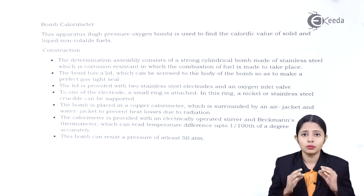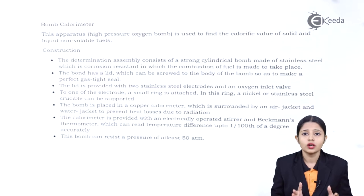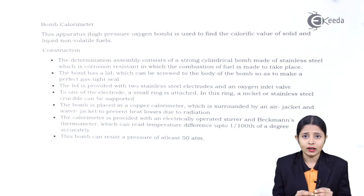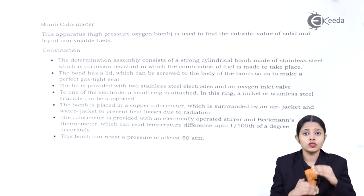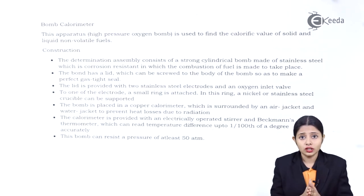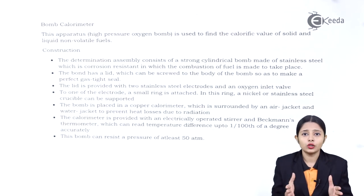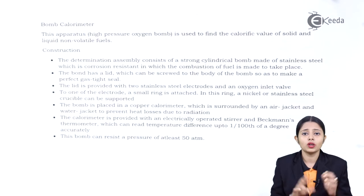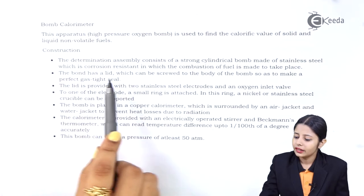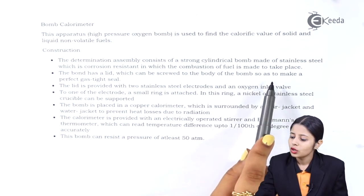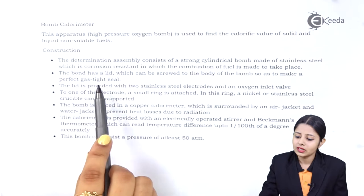Inside the bomb calorimeter, many reactions involving fuels occur. There can be a lot of gases and high temperatures, but the calorimeter must sustain all of it. That is why it is made of stainless steel — a material that resists corrosion. The bomb has a lid which can be screwed to the body of the bomb to make a perfect gas-tight seal.